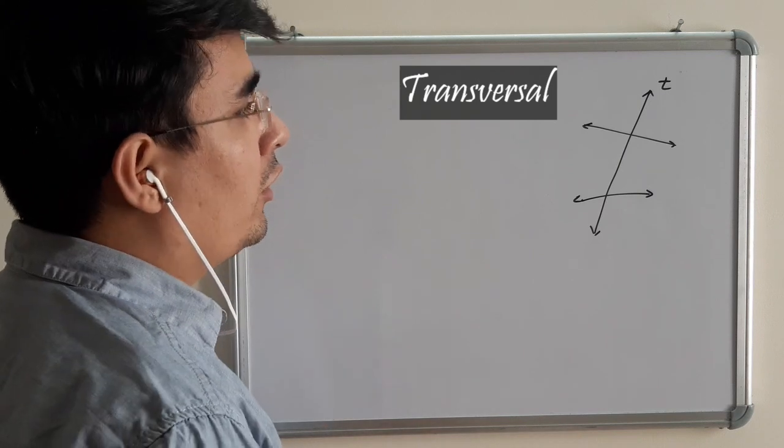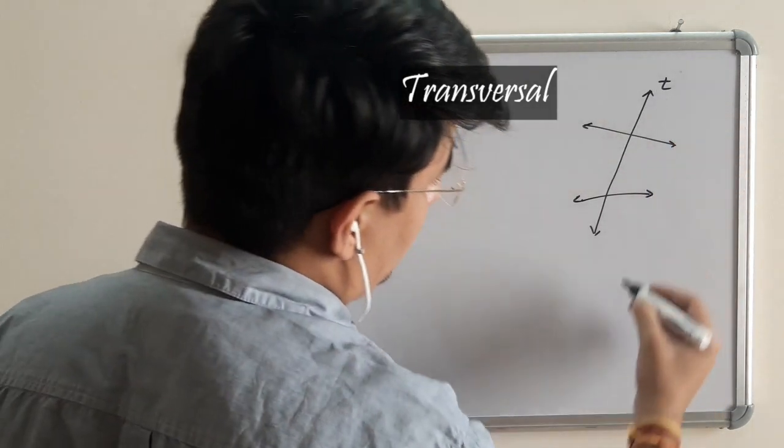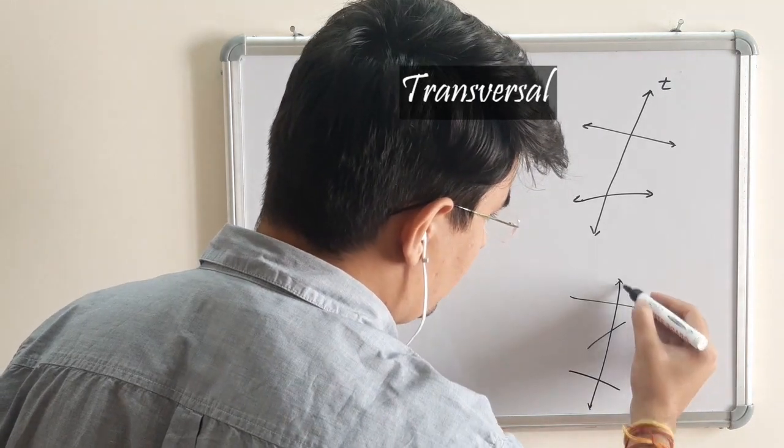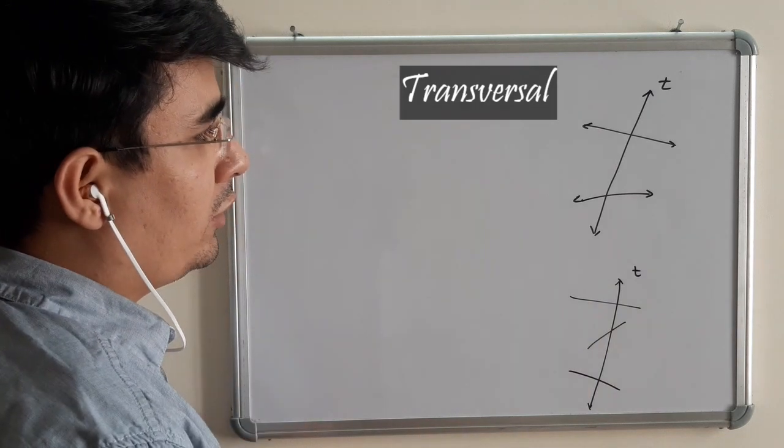This is a common way of representing. So transversal is, it can be multiple lines. The common line which is going through all the lines is known as a transversal. That's the basic definition.